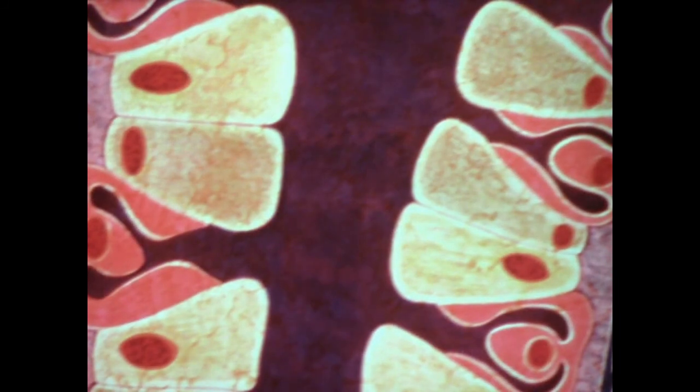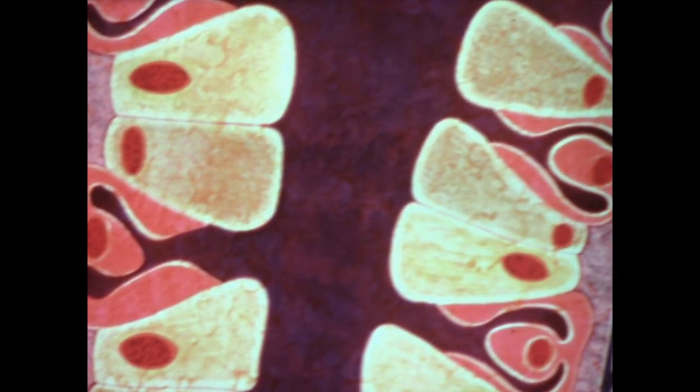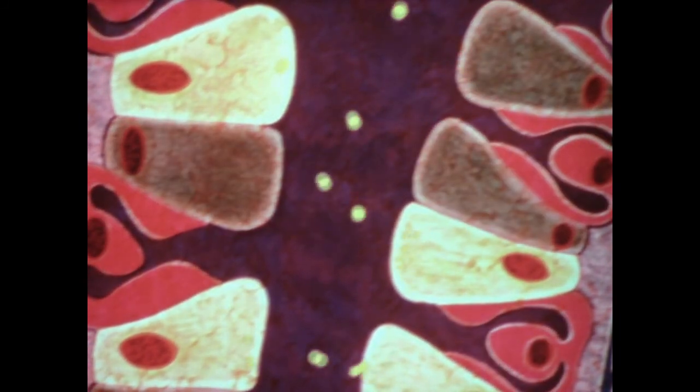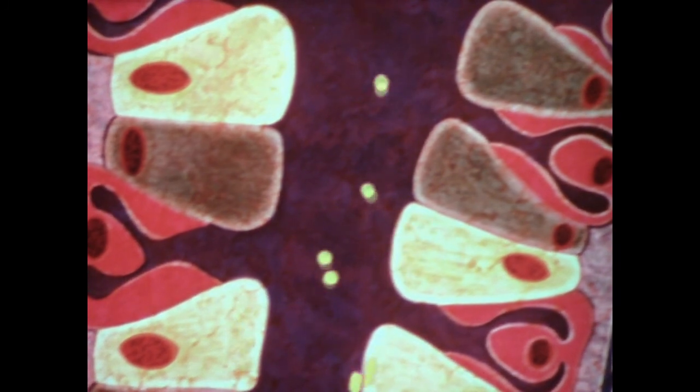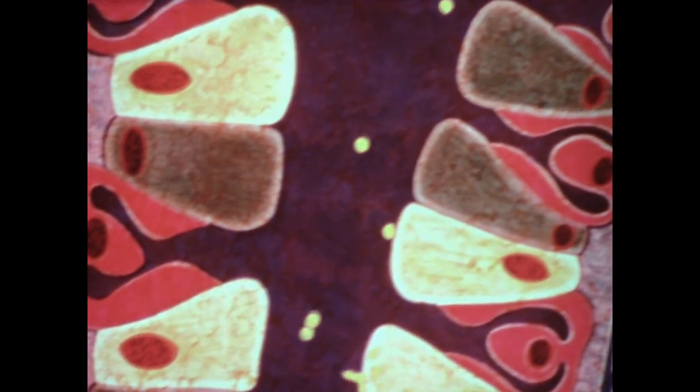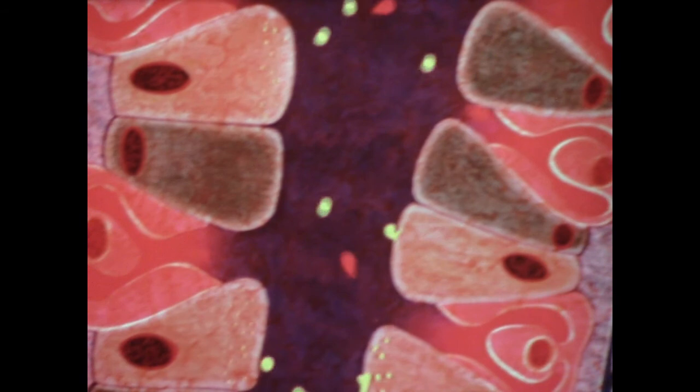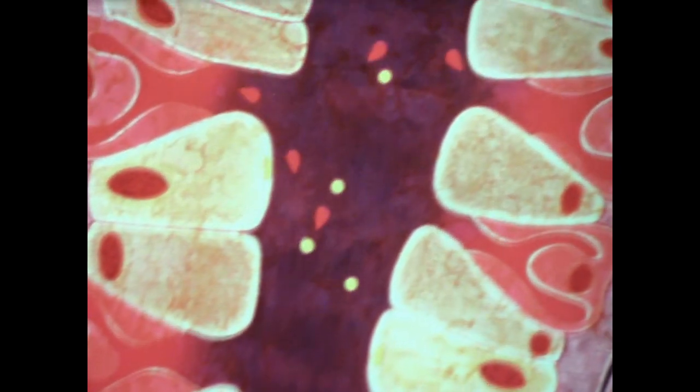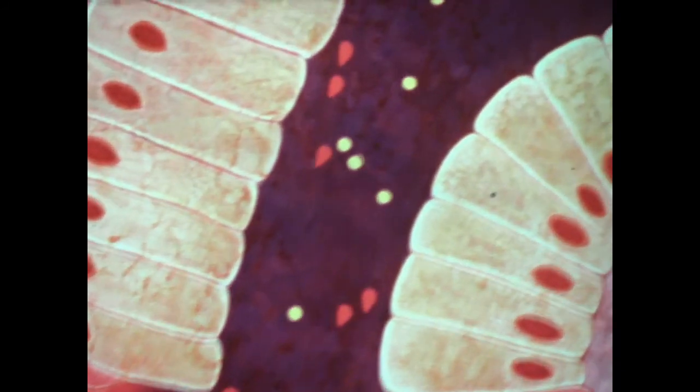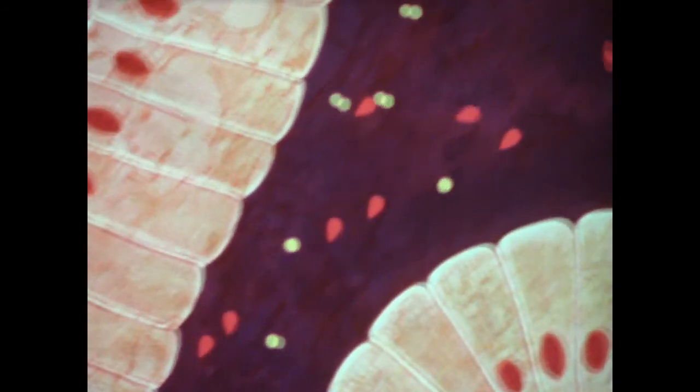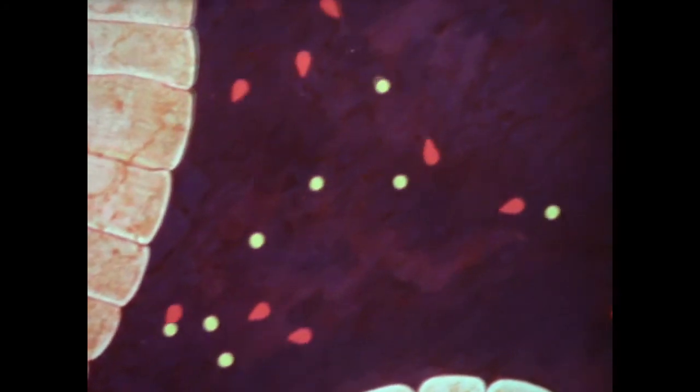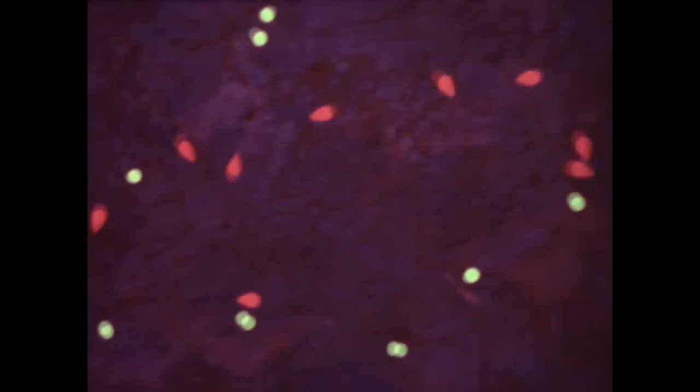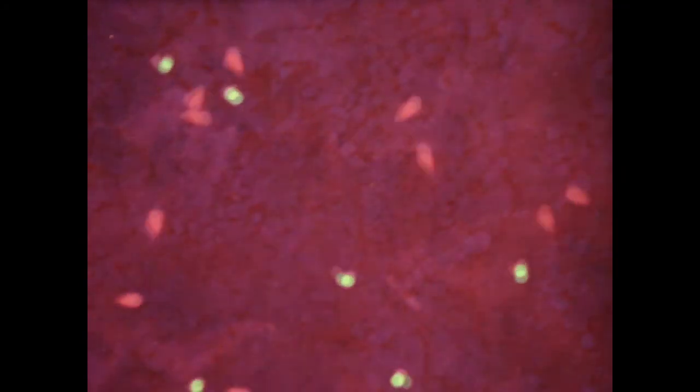The cells that make up the gastric glands are specialized. Some cells produce an inactive enzyme-like substance called pepsinogen. Other cells secrete hydrochloric acid. As these substances mix in the stomach, the hydrochloric acid acts on pepsinogen to form an active enzyme, pepsin.